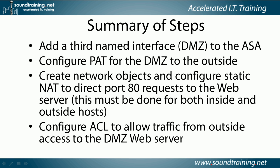Here's a summary of the steps. We'll add a third named interface — the DMZ — to the ASA. We'll configure port address translation, PAT, for the DMZ to the outside. We'll create network objects and configure static NAT to direct port 80 requests to the web server, which must be done for both inside and outside hosts. Finally, we'll configure an access control list to allow traffic from the outside to access the DMZ web server. We'll do this in a combination of the ASDM GUI and the command line interface, roughly half and half.